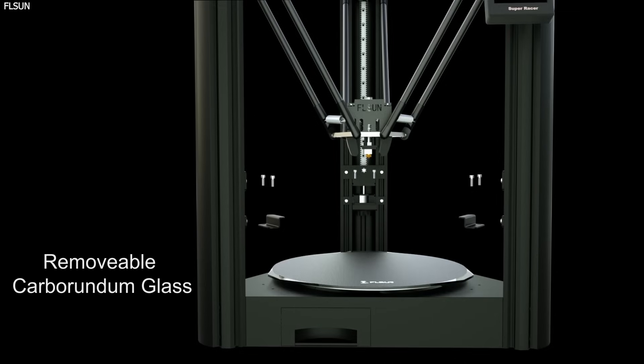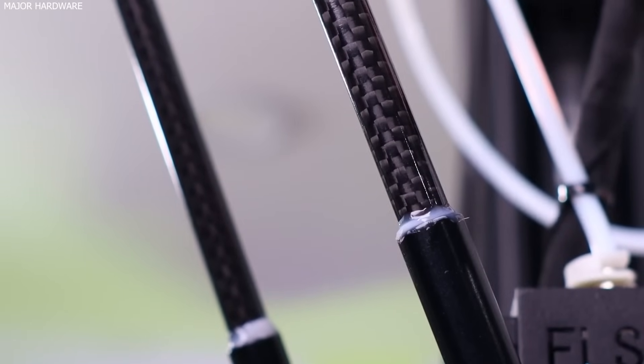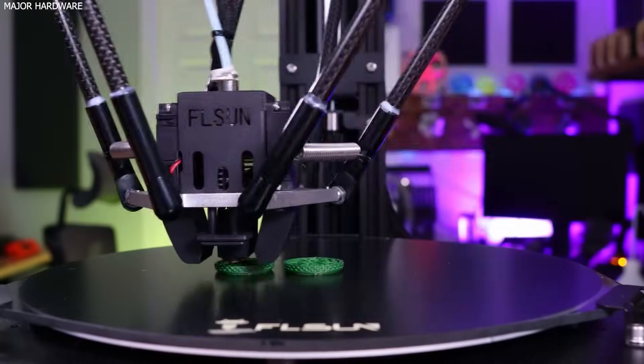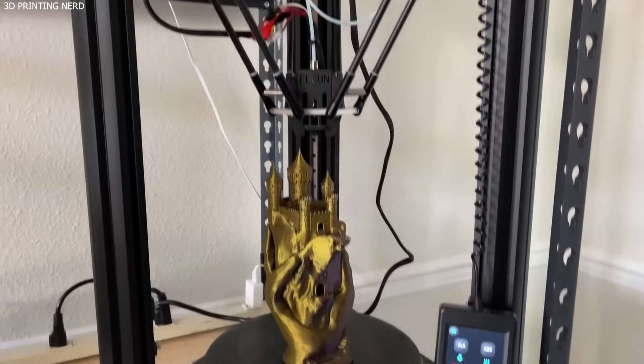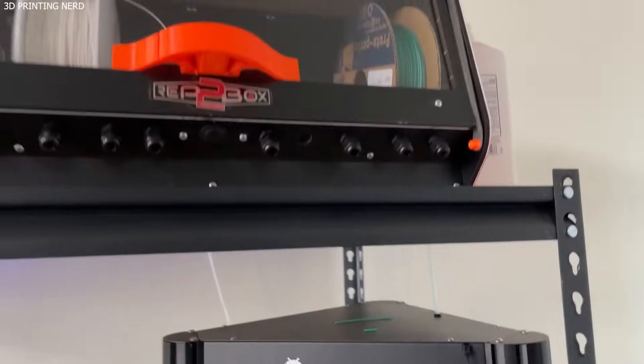Delta-style printers are known for their lightweight moving parts and precise movement, which allow them to achieve high speeds while maintaining exceptional print quality. The all-metal frame of the Super Racer provides additional stability, reducing vibrations and ensuring a smooth printing process. The automatic bed leveling system simplifies setup, making it easy to start printing quickly.